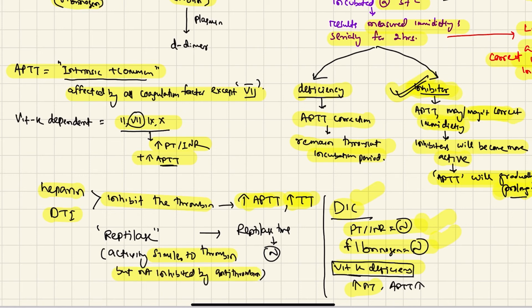So if you put reptilase in the blood and measure the reptilase time, it will come normal in case of heparin or DTI, because the reptilase will act as a thrombin. So it's like having thrombin in presence of heparin or direct thrombin inhibitor. So the reptilase time will be normal in case of heparinized blood or DTI blood.